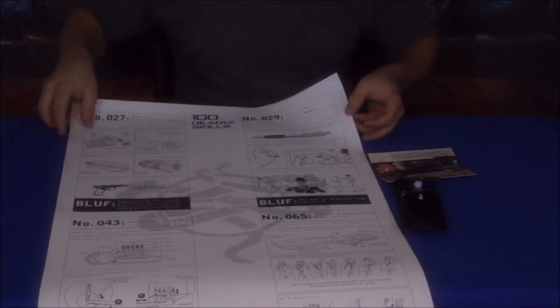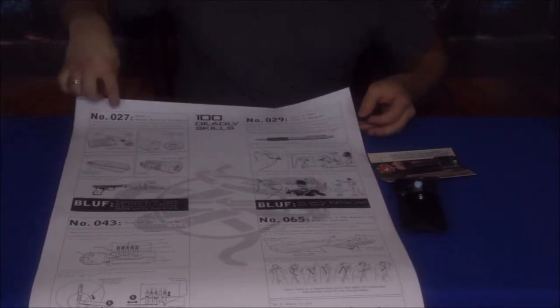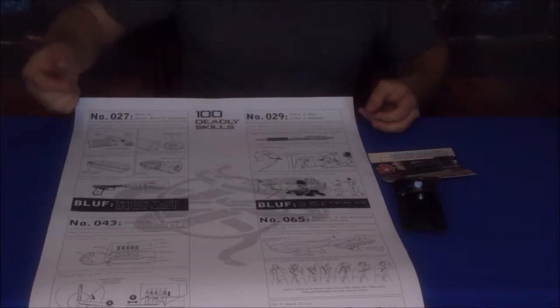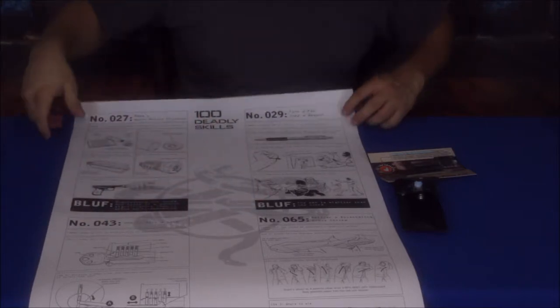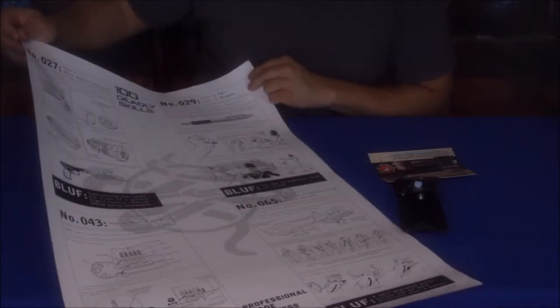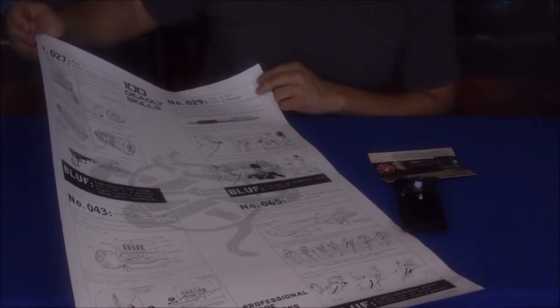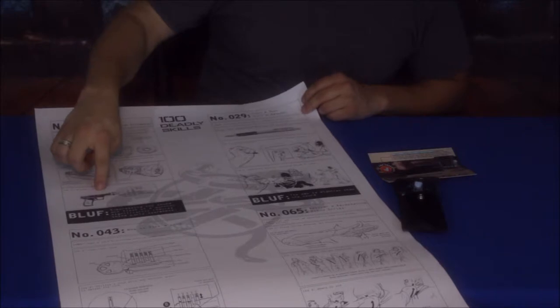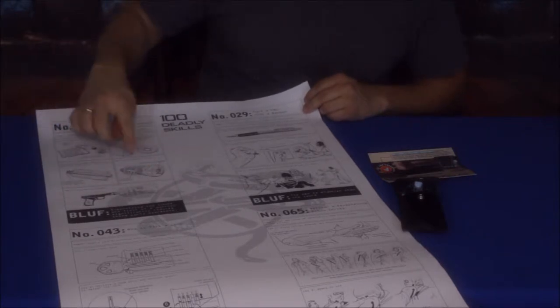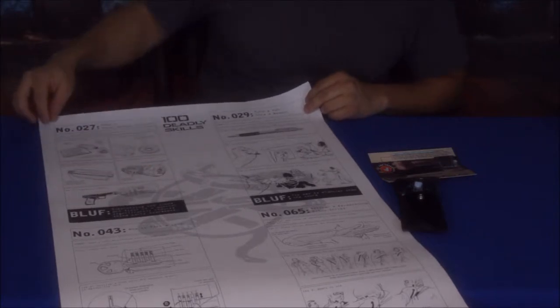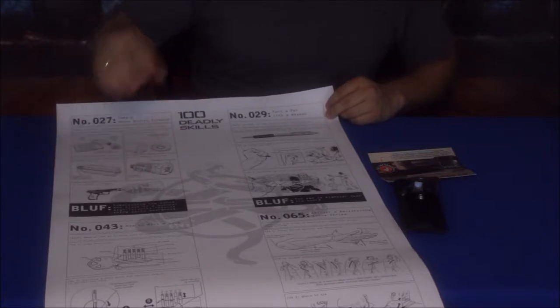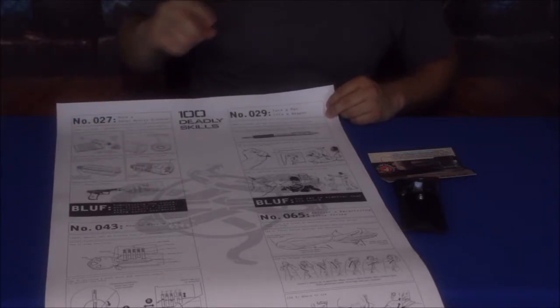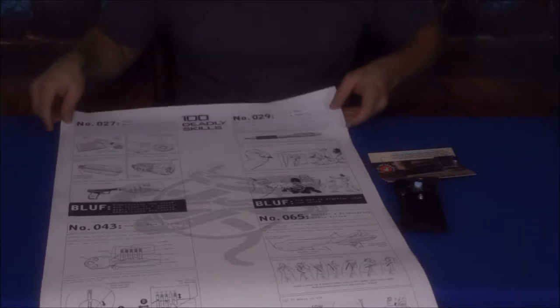There are a handful here, there's not a hundred on here, so they have them numbered: number 27, 29, 43, and 65. One of them shows the whole bottle on a gun, so I'm guessing that is kind of making some type of suppressor for the muzzle, like a very cheap generic suppressor for firing your gun.